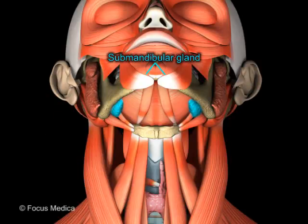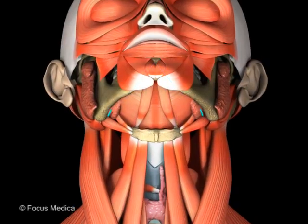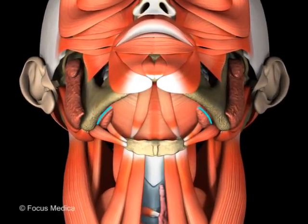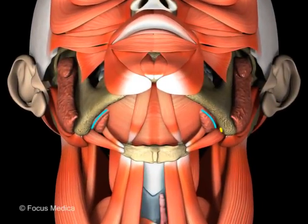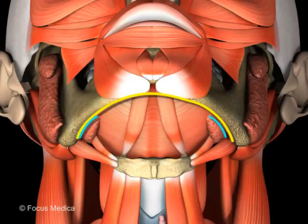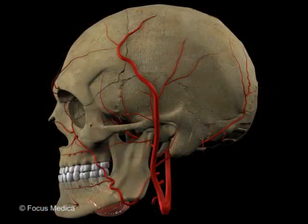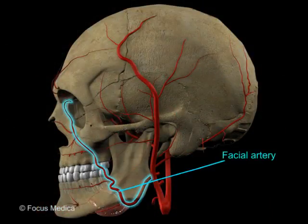The submandibular gland is the principal content of the digastric triangle. Its superficial surface is seen just below the inferior border of the mandible in this dissection. The posterior edge of the mylohyoid muscle demarcates it from its deep lobe. The facial artery is closely related to this gland.